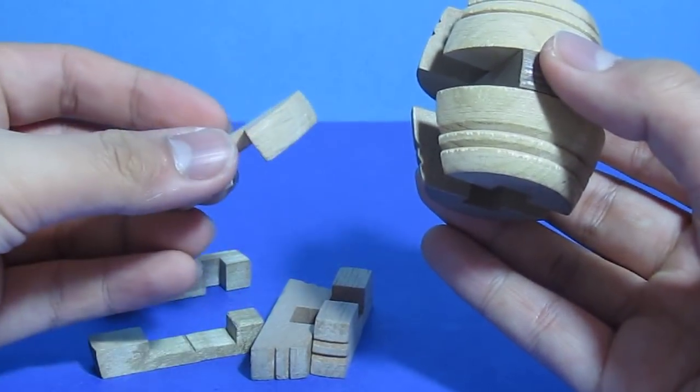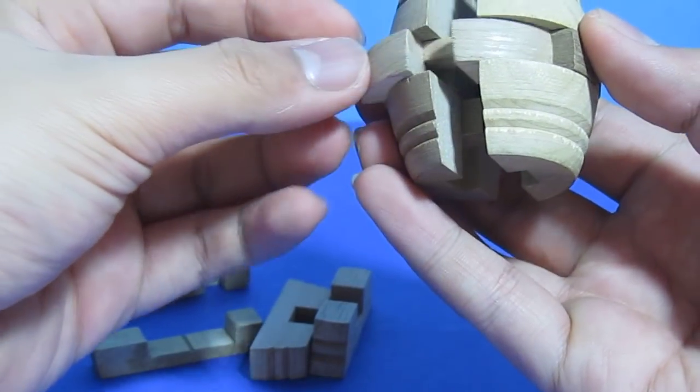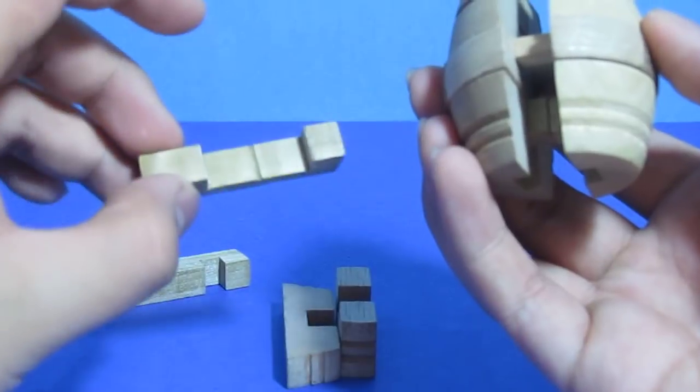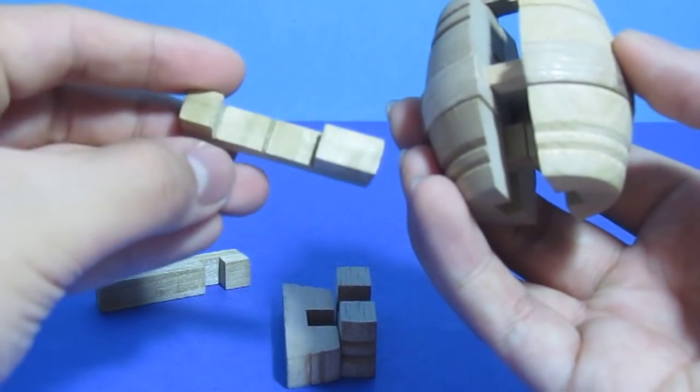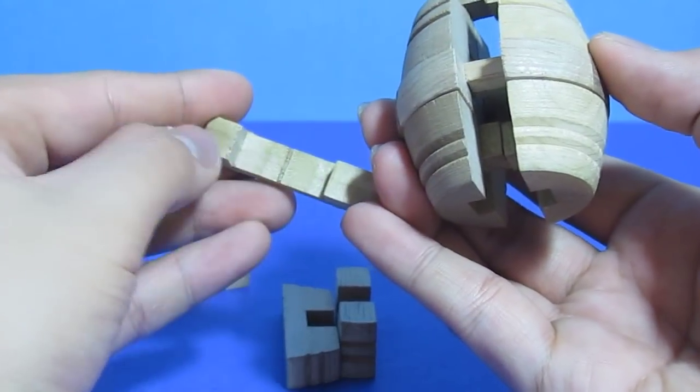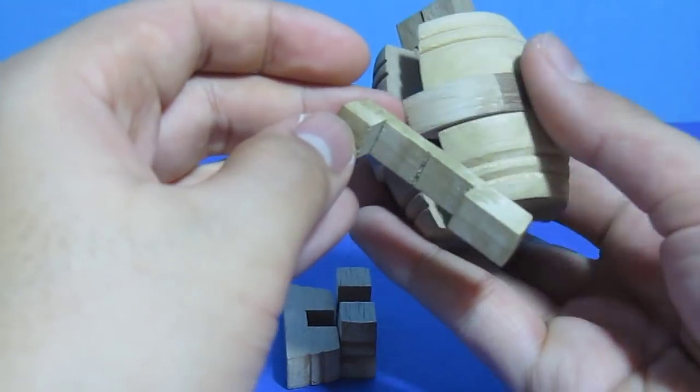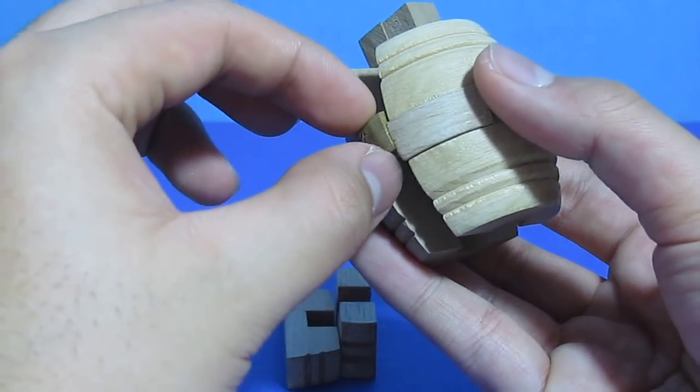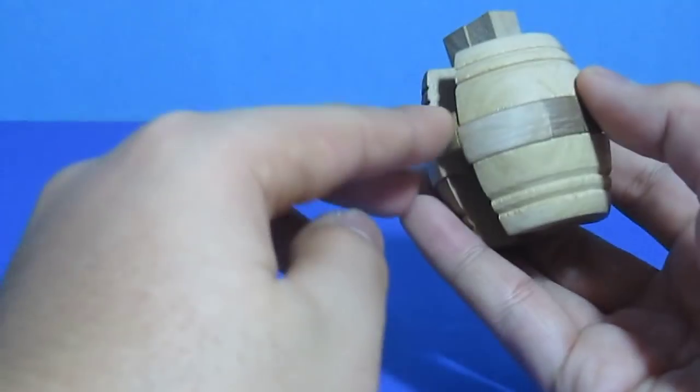Next you want to get one of these pieces and you want to just pick one side and place that there. Next you want to get this piece, one of the unique pieces. And you notice how there's a shorter part here and a longer part here. You want to insert the longer part inside here, like that, so that it will be flush here and here.